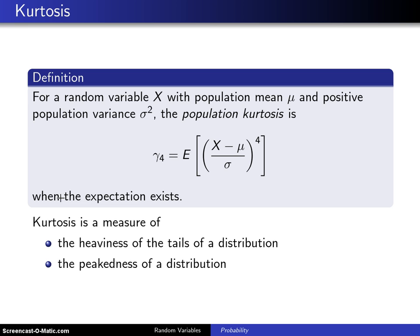The population kurtosis is a measure of the heaviness of the tails of a distribution. That is, if a distribution has heavy tails, it will have a large kurtosis, and it is also a measure of the peakedness of a distribution.